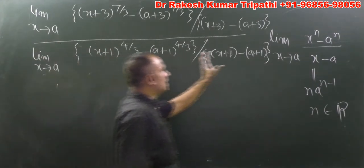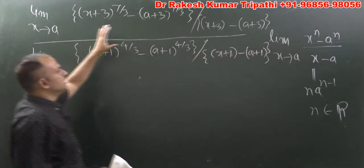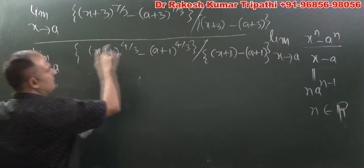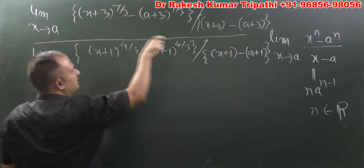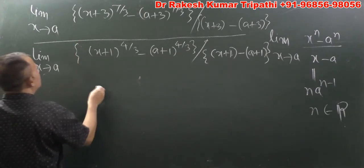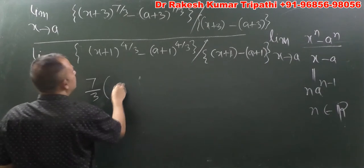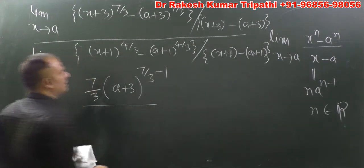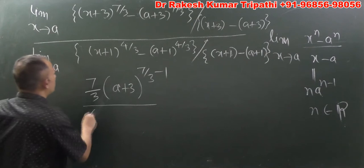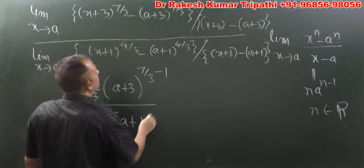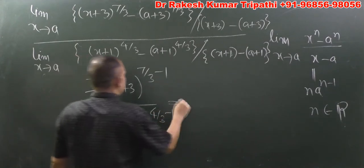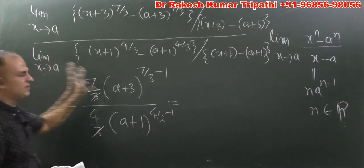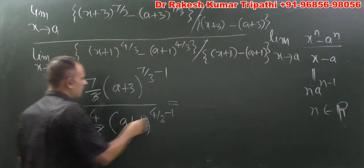Everything is looking like the standard form: instead of x we have x+3, instead of a we have a+3, and the power is 7/3 as n. So we can apply the standard result. The numerator becomes 7/3·(a+3)^(7/3 - 1). In the denominator it is 4/3·(a+1)^(4/3 - 1). The 3s cancel.